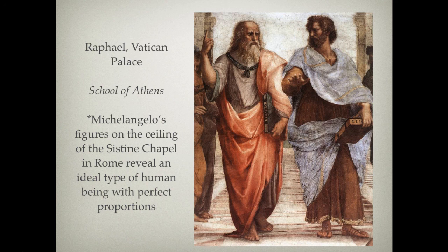Michelangelo's figures on the ceiling of the Sistine Chapel in Rome also reveal the ideal type of human beings with perfect proportions. For example, the Creation of Adam — the famous scene where the two fingers touch — shows idealized proportions of a human form.